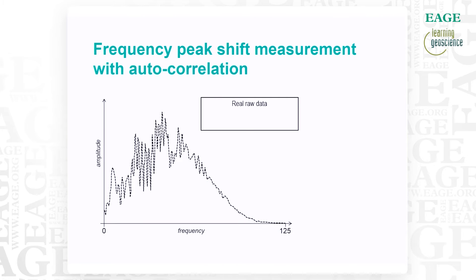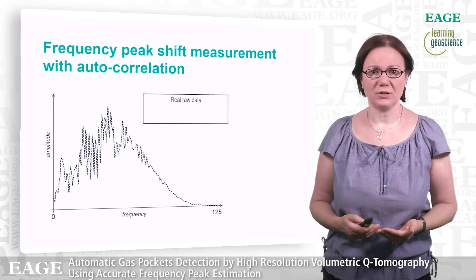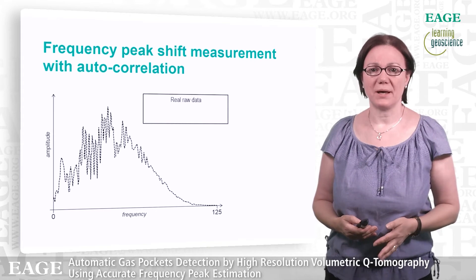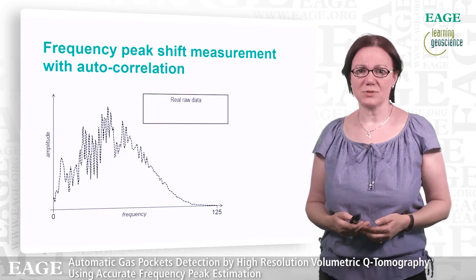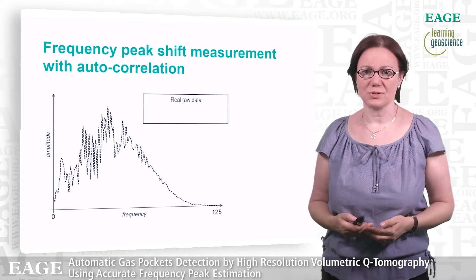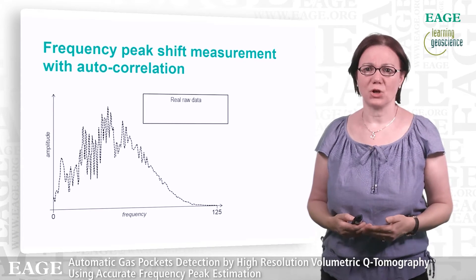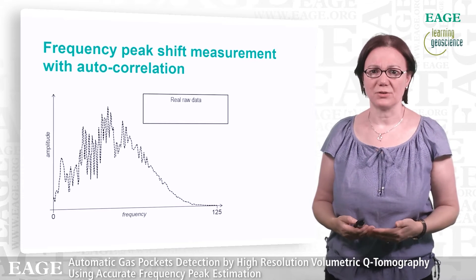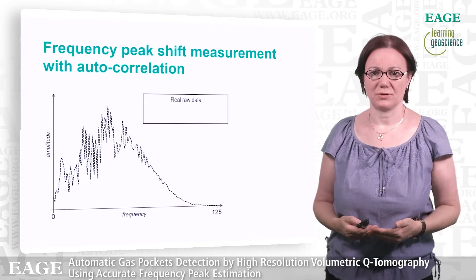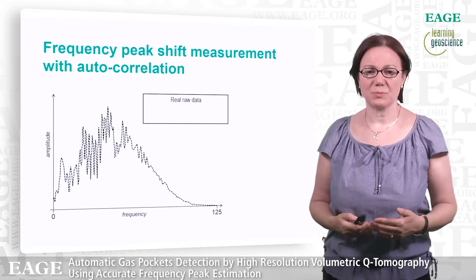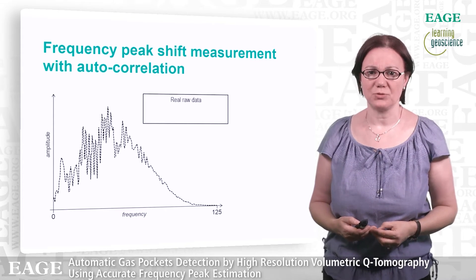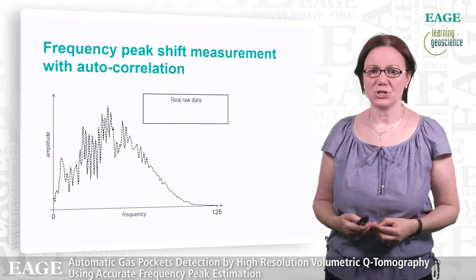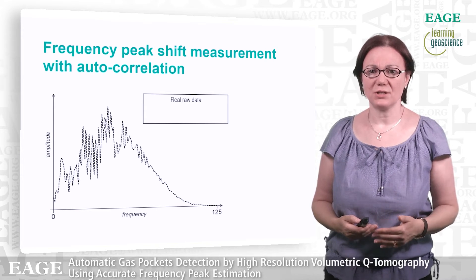The idea to approximate the spectrum of real data with a Ricker works fine in many situations, but the typical low signal-to-noise ratio observed on real data can make the data fitting by a Ricker wavelet quite difficult. We propose to replace this fitting by the computation of the autocorrelation of the signal in sliding short-time windows.